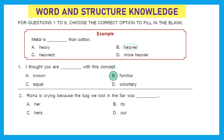Question 2: 'Richa is crying because the bag we lost in the fair was her dash.' The options are: its, hers, or are. The right pronoun to be used here should be option C, hers. It is a possessive pronoun and it is used to show ownership.